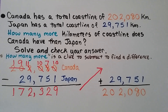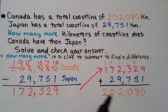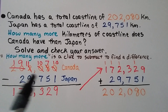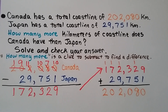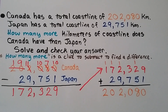We have 172,329 as our addend. We do our addition and regroup when necessary. Our sum is the same as our original minuend. So if the sum of the difference and subtrahend is equal to the minuend, our answer is correct.